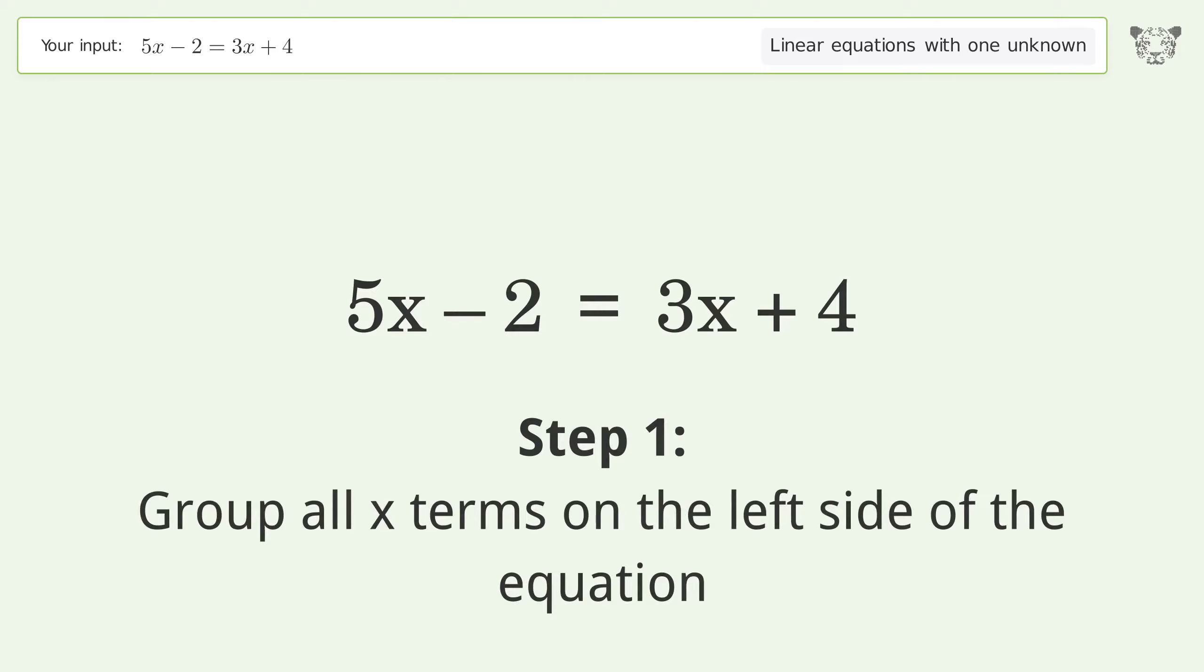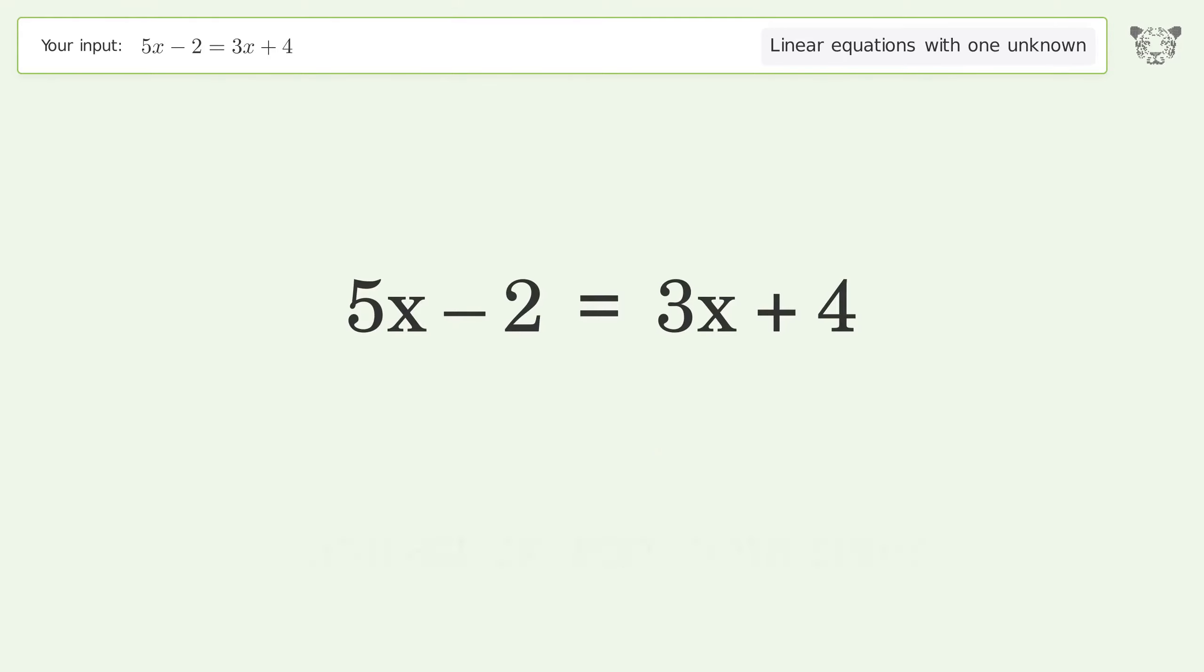Group all x terms on the left side of the equation. Subtract 3x from both sides. Group like terms. Simplify the arithmetic.